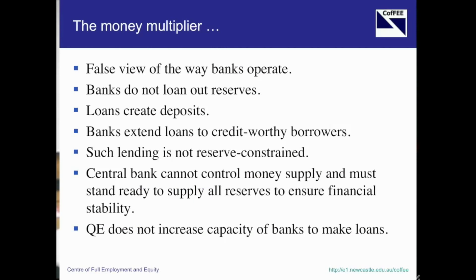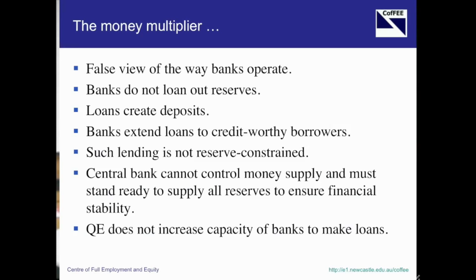Another myth is the money multiplier myth. Students learn this — it's a really turgid part of the macroeconomics program where they're taught all these formulas, and it's all fake. It has nothing to do with the way the banking system actually operates. The argument is that banks lend out reserves, so they've got to basically induce a build-up of reserves before they can make loans. That's what quantitative easing was supposedly all about — that banks were not lending during the crisis because apparently they had no reserves.